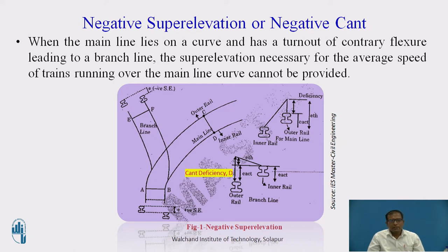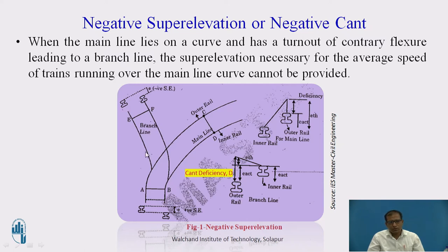When the main line lies on a curve, both main line and branch line — you can see that when the main line lies on the curve, it has a turn of counter-flexure. The branch line is crossing here at the same elevation. The super elevation necessary for the average speed of trains running over the main line curve cannot be provided here.